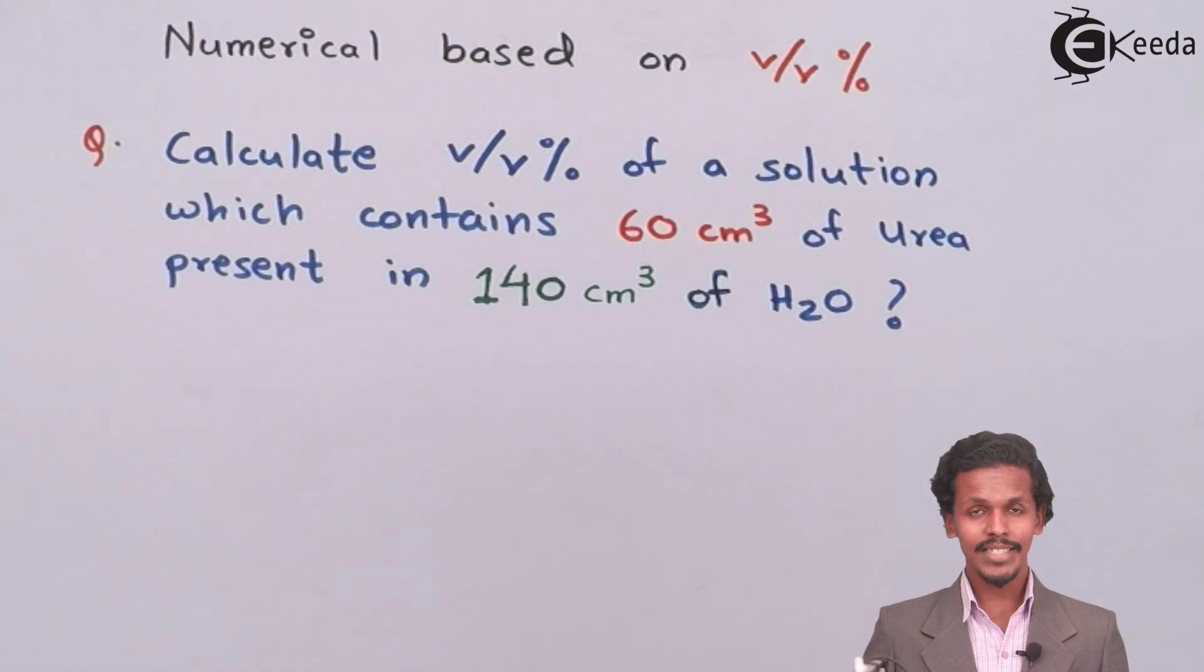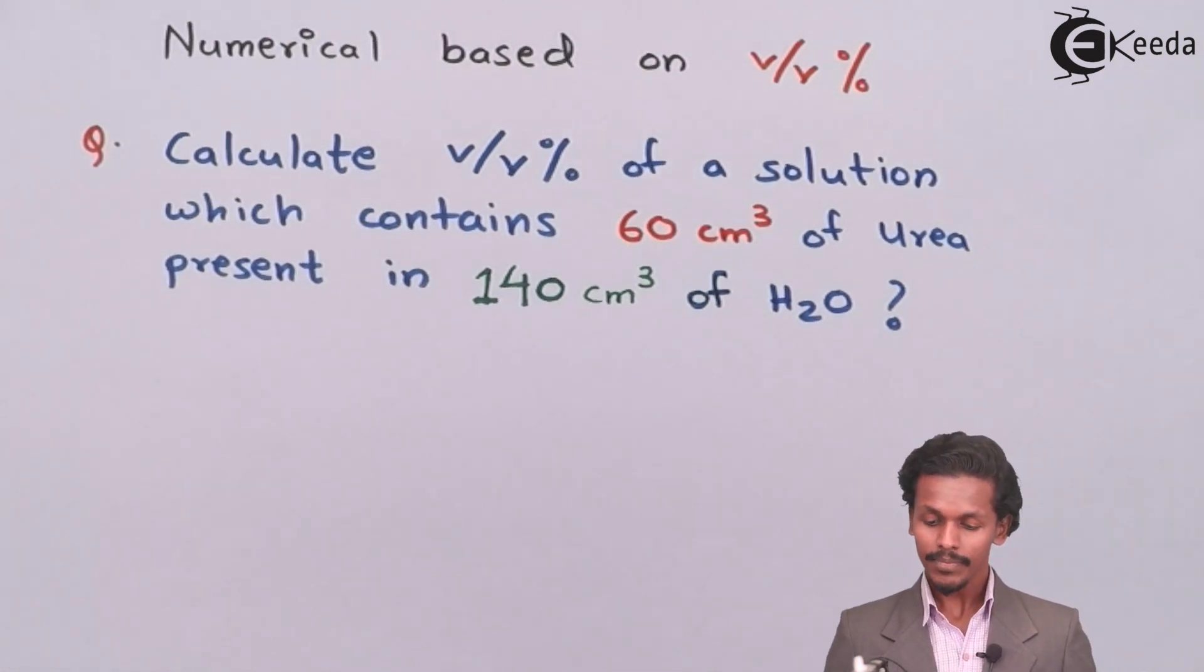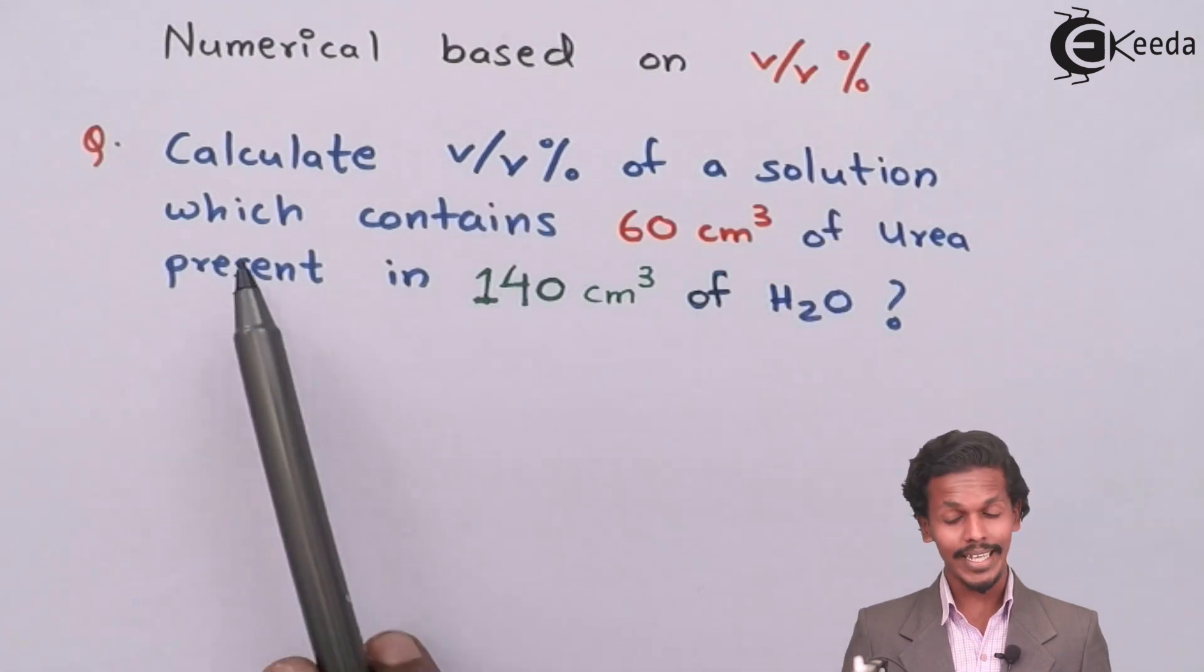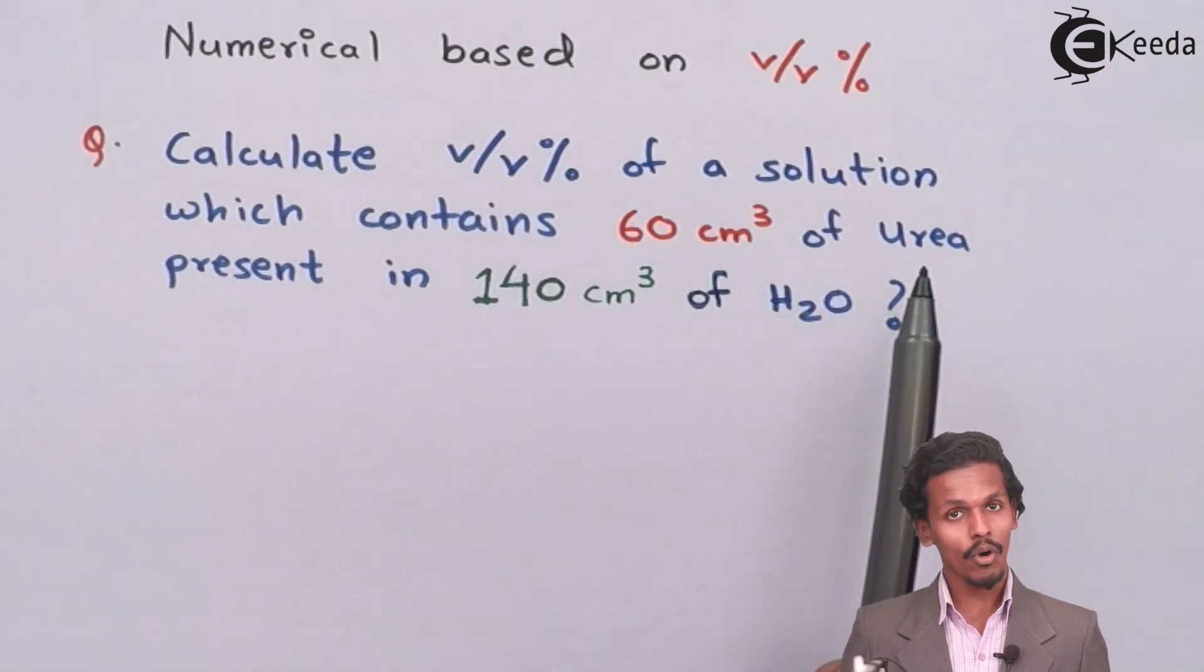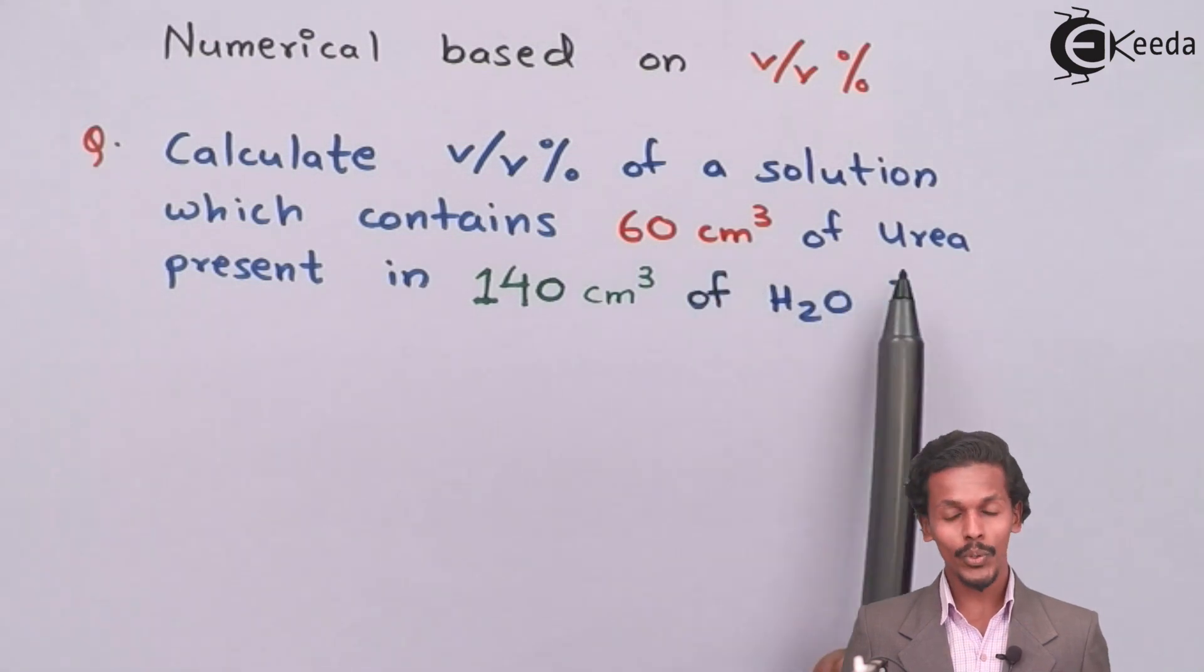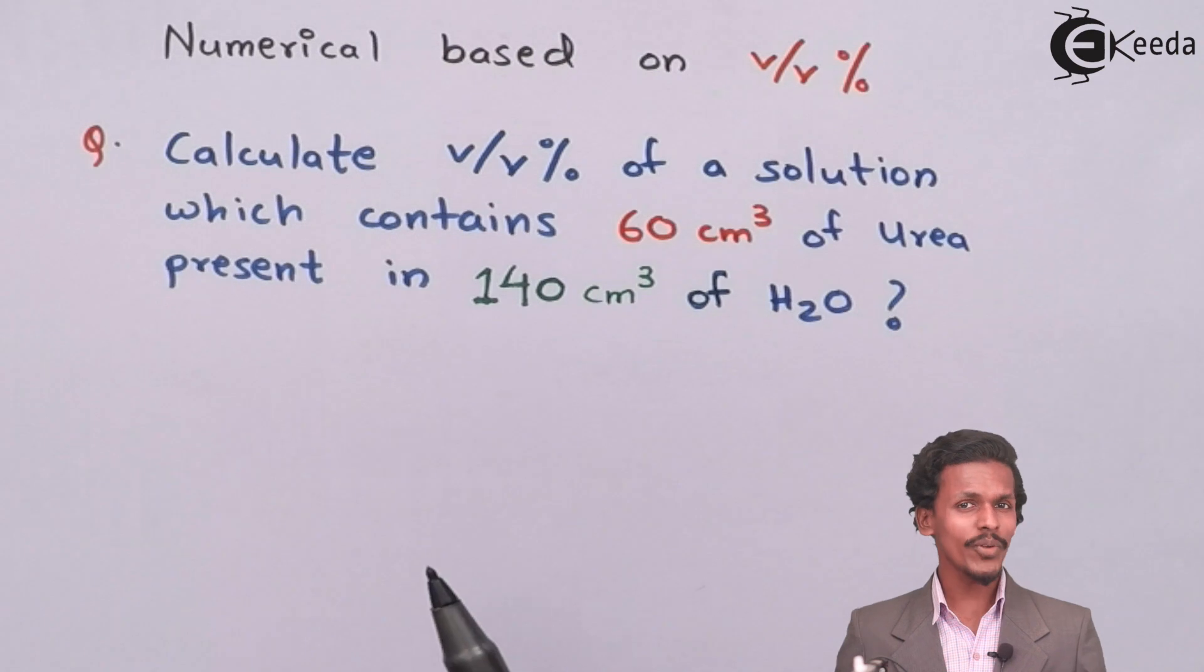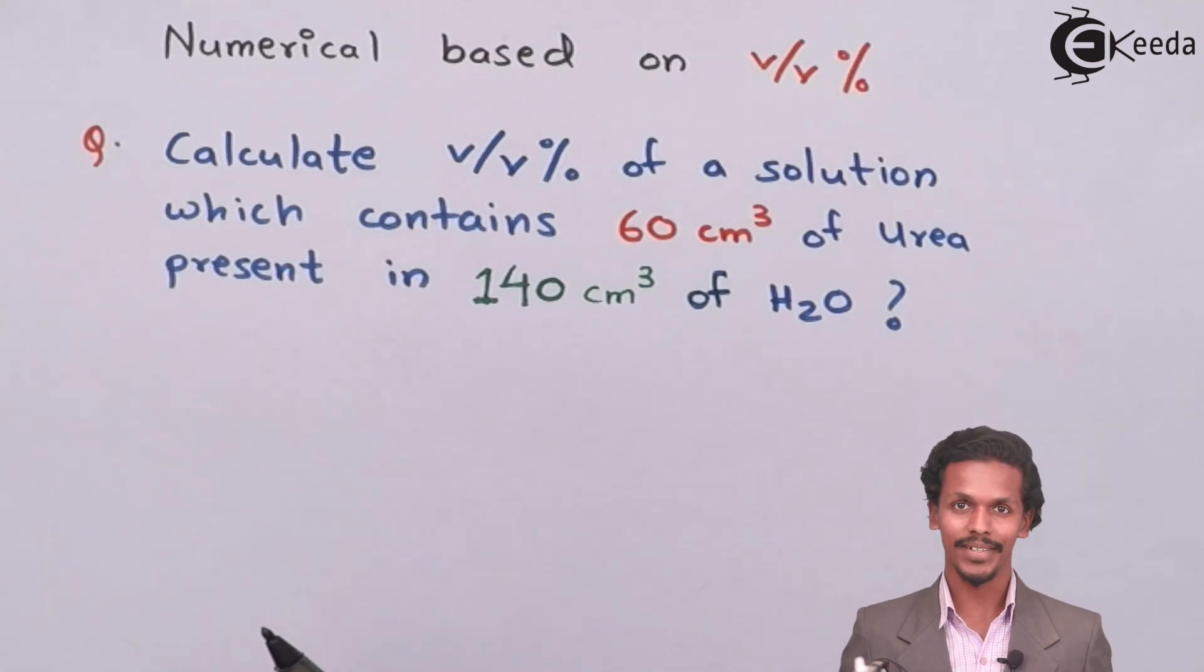As you can see on your screen, there is a numerical based on percentage by volume. The problem is: calculate the v/v% of a solution which contains 60 cm³ of urea present in 140 cm³ of H₂O. How can we solve it? It's very simple, let us do so.